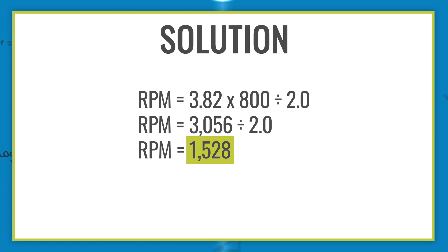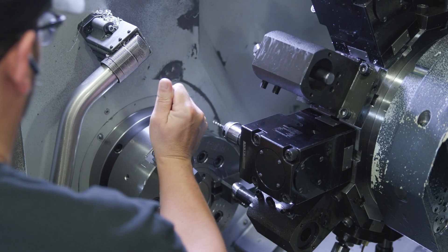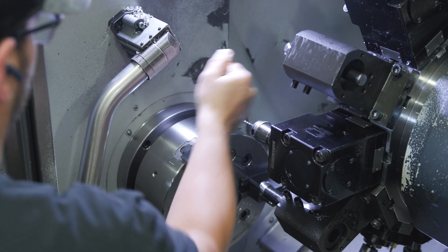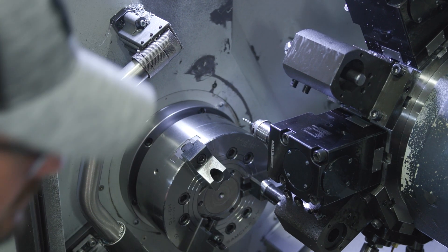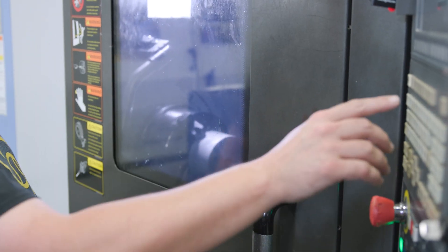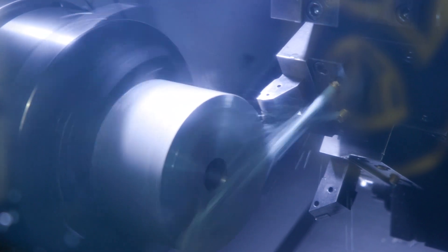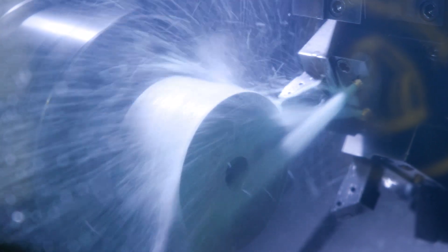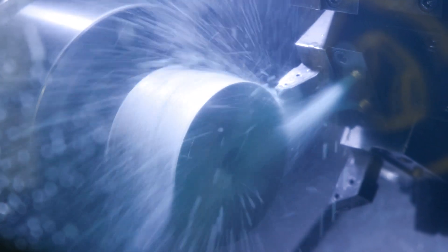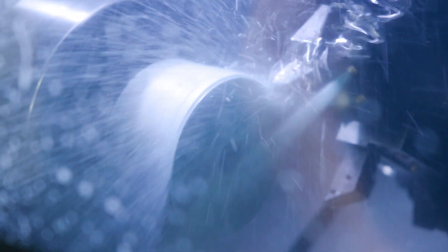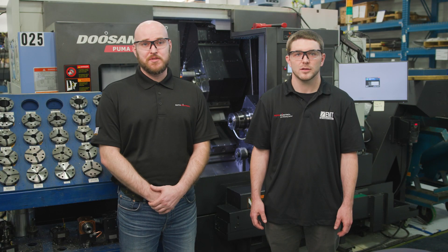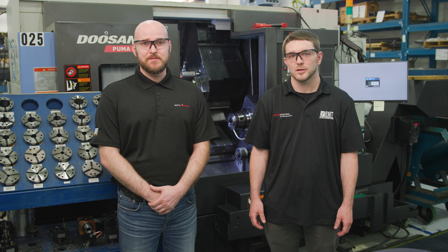Spindle speed is very important in machining because using too high a spindle speed can lead to overheating and premature tool failure. Similarly, using too low of a speed will push the tool into the cut faster, causing the material removal rate to increase. This can also cause premature tool failure.